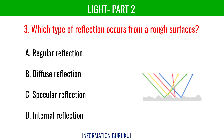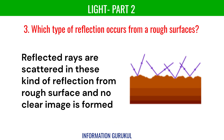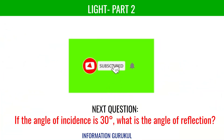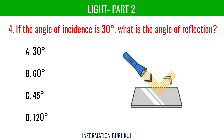Which type of reflection occurs from a rough surface? Diffused reflection. Reflected rays are scattered in this kind of reflection from a rough surface and no clear image is formed. If the angle of incidence is 30 degrees, what is the angle of reflection? 30 degrees.